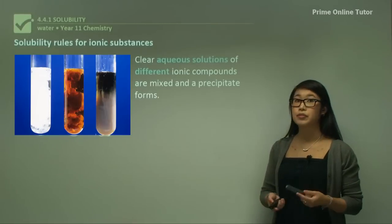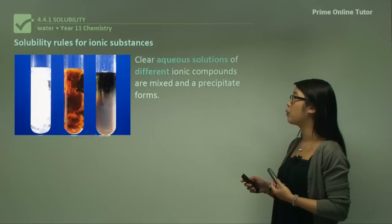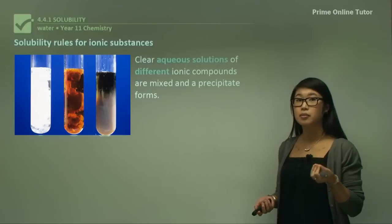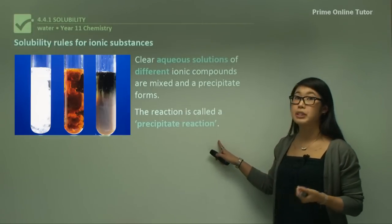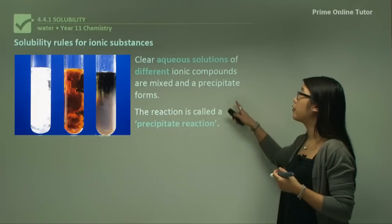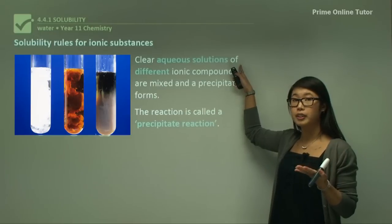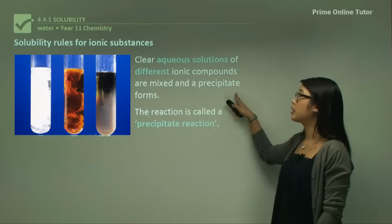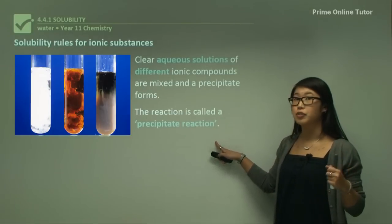Clear aqueous solutions of different ionic compounds, when they're mixed together, can form a precipitate reaction — that means we're going to have a solid form. When this happens, we call it a precipitate or precipitation reaction. So when you have two solutions which have a soluble product in them, that means they're clear, and when you add them together we're going to have a cloudiness as solid forms.